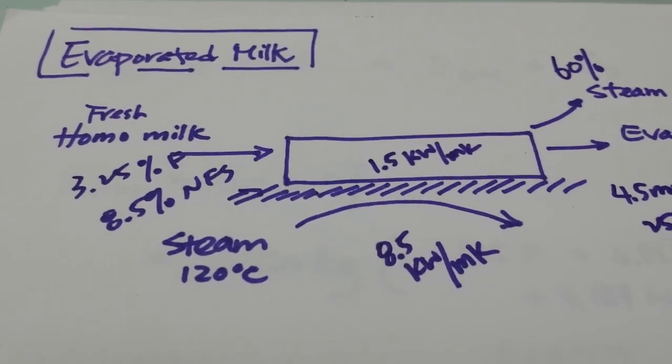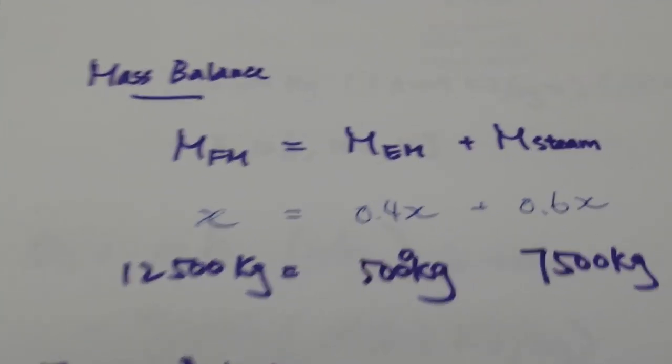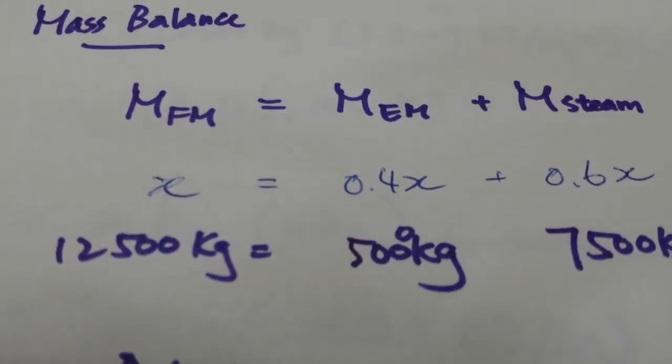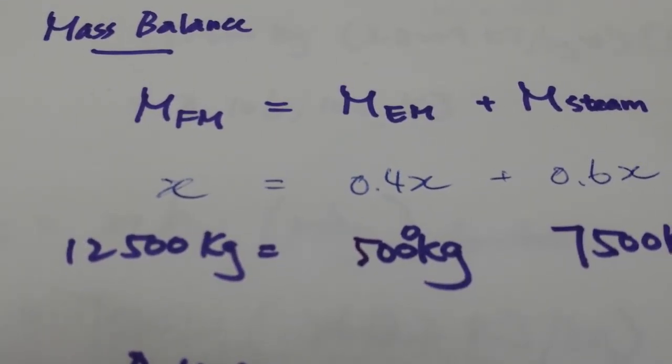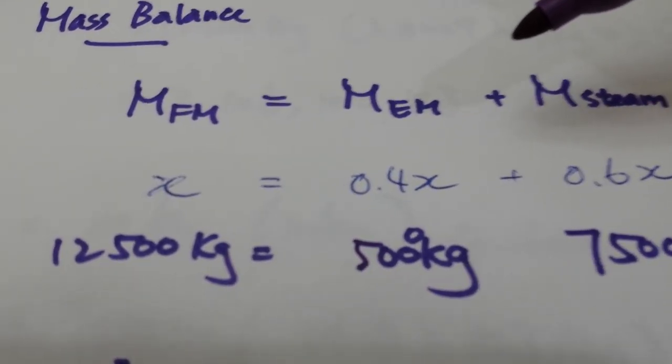First of all, let's take a look at energy balance. What is going on? How much water is going to be given away for the production of five tons of evaporated milk?